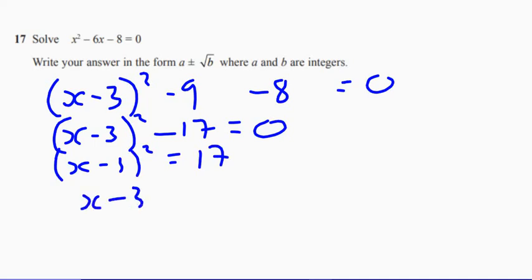So now we've got x minus three equals square root of 17. Remember, when we take the square root, that's where we get the plus minus bit. Add three to both sides. So x equals three plus minus root of 17.